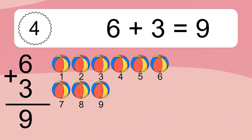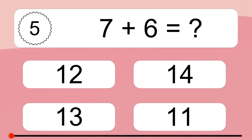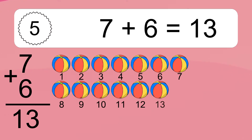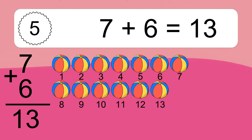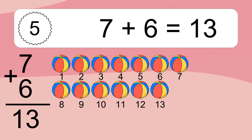Seven plus six equals what? Seven plus six equals thirteen. Let's count it: one, two, three, four, five, six, seven, eight, nine, ten, eleven, twelve, thirteen.